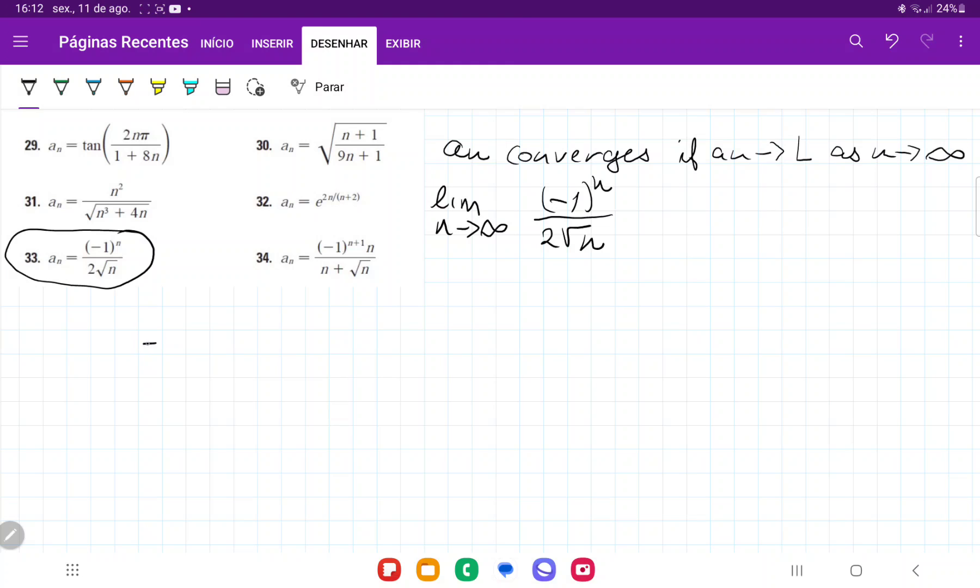Now, this negative 1 to the power of n is just going to alternate between negative 1 and positive 1. If n equals 1, it gives us minus 1. If n equals 2, minus 1 squared is 1. If n equals 3, minus 1, then 1, negative 1, and so on. So we can see this just alternates between 1 and negative 1.